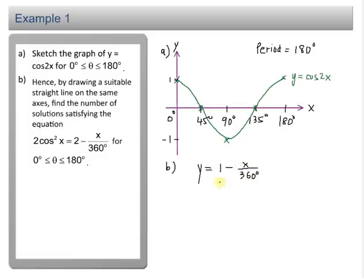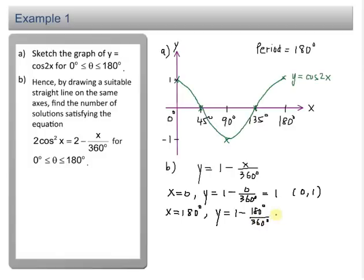So the first point here, I can substitute x = 0°. When x = 0, my y = 1 - 0/360 = 1 - 0 = 1. So the first point I have is (0, 1). The second point, you can either substitute 90° or 180°. Let's say I have x = 180°. So my y should be 1 - 180/360 = 1 - 0.5 = 0.5.